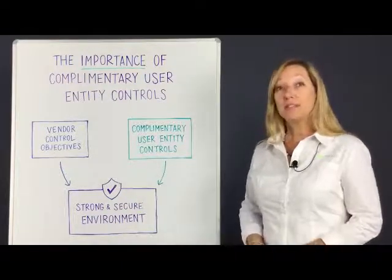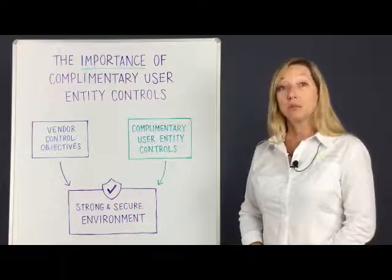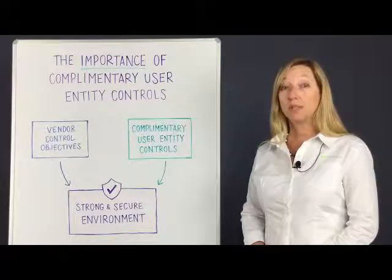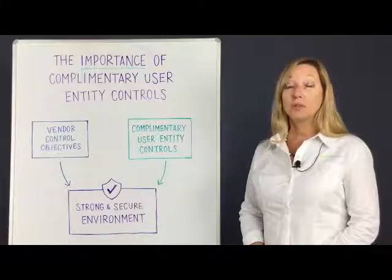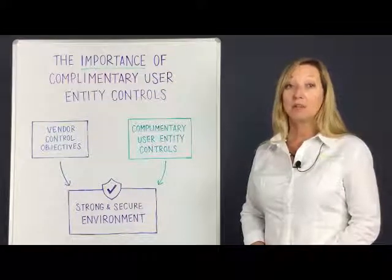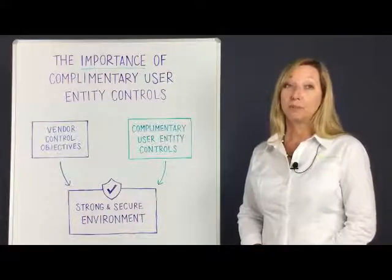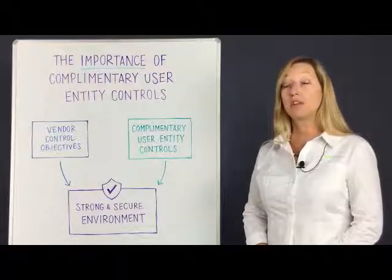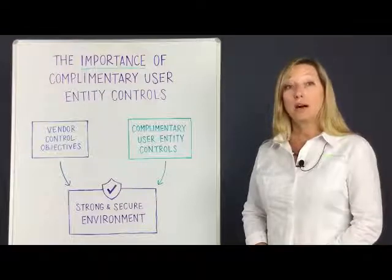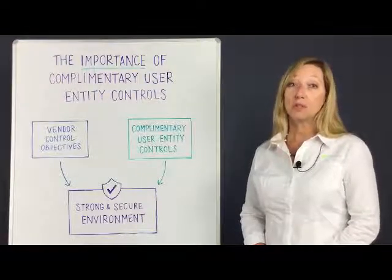So exactly what does this mean to you and your organization? This means that your organization is responsible for reviewing and implementing all applicable controls. Ultimately, your organization plays an active part in supporting the operating effectiveness of your vendor. Without implementing the UE controls, the service organization's controls will not operate as intended, thus potentially producing material weaknesses.